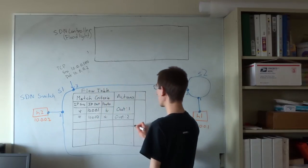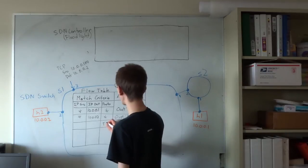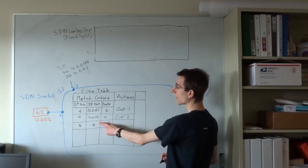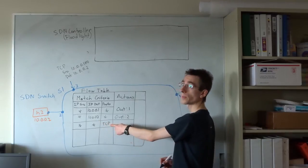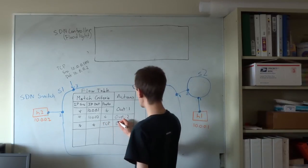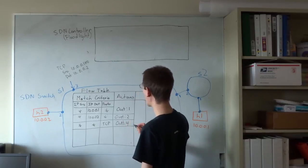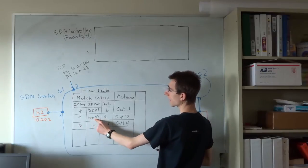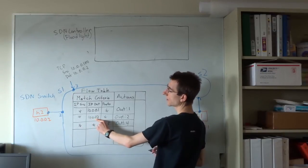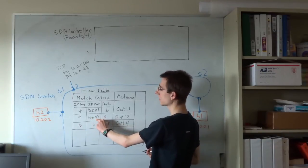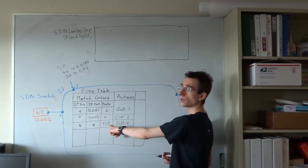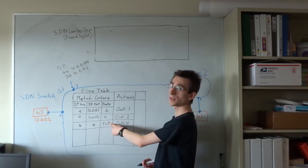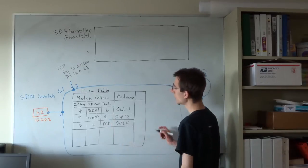Now, let's assume that we also had a third entry in our table that was matching all TCP packets. We won't specify any values for the IP source or IP destination fields, but we will specify a value for the protocol field and assume that these packets are going out port 4 on this particular switch. This packet matches not only the second entry because its destination is 10.0.0.2, it's also going to match this third entry in our flow table because the protocol is TCP. In this particular case, we need to tell the switch which of these rules should take priority.